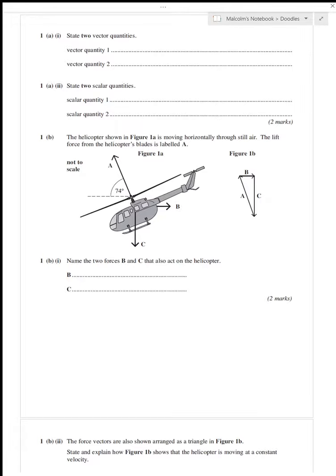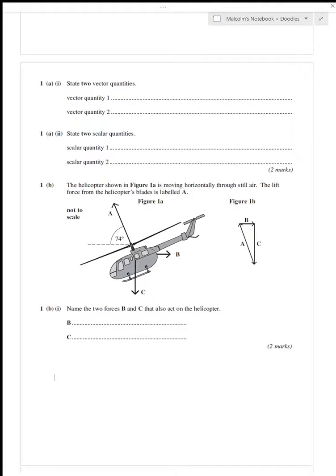Quark assessment question one. Let's have a look. State two vector quantities - any quantities with size and direction. I'm going to go with velocity, that has a size and a direction, and I'll put acceleration.